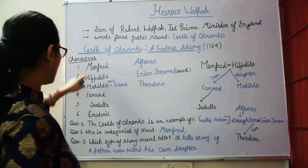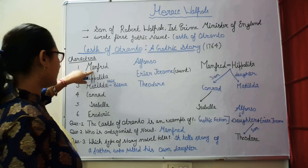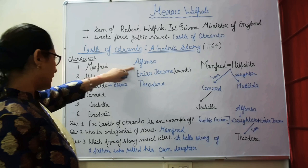Manfred is the lord of the Castle of Otranto. The castle is not rightfully his — it actually belongs to Alfonso. Manfred's grandfather usurped this castle through treachery.